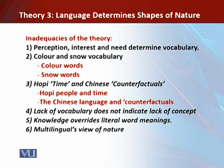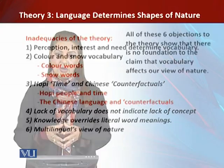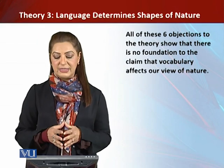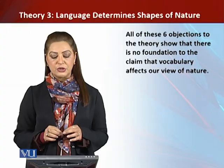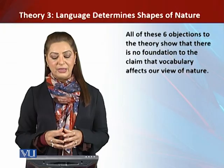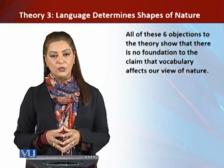The sixth point concerns multilingual views of nature. If different languages had distinctive and important effects on the way we view nature, then multilingual individuals would similarly have distinctive and important ways of viewing nature — but this is not the case. A multilingual is a whole person who perceives nature as other humans do. To conclude, all six of these objections show that there is no foundation to the claim that vocabulary affects our view of nature.